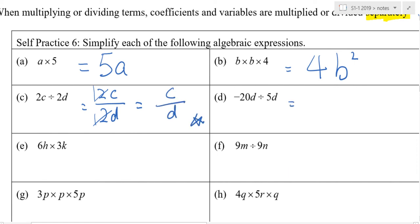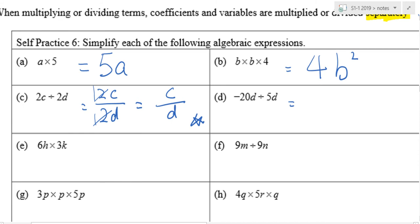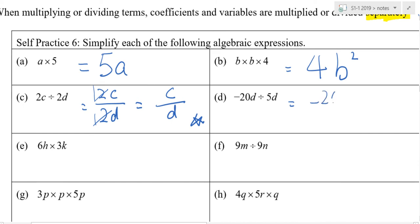Next one. I want to do the same thing. So I will write down minus 20D over 5D. Again, number do with number?